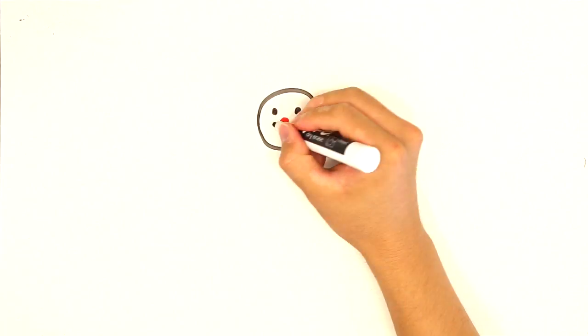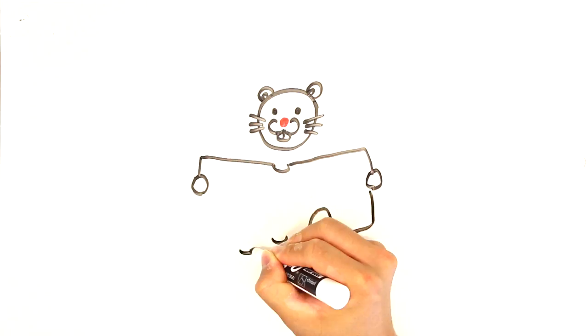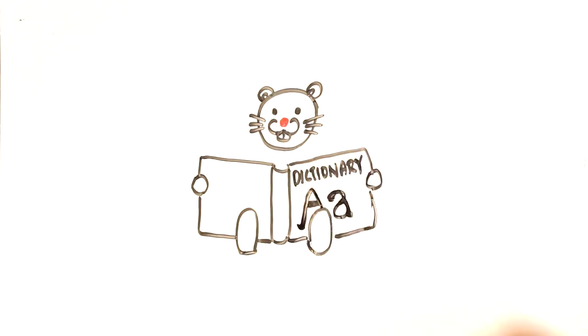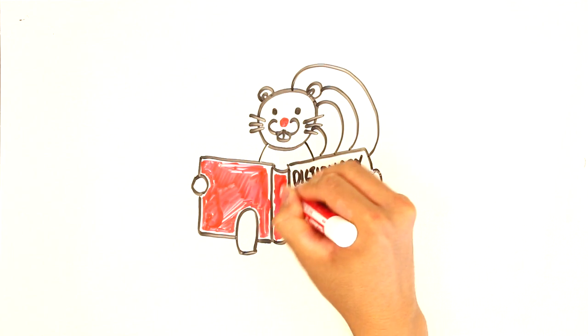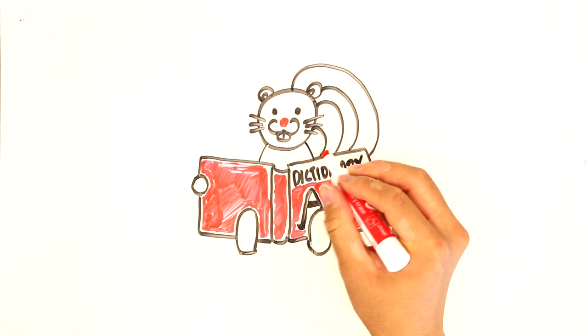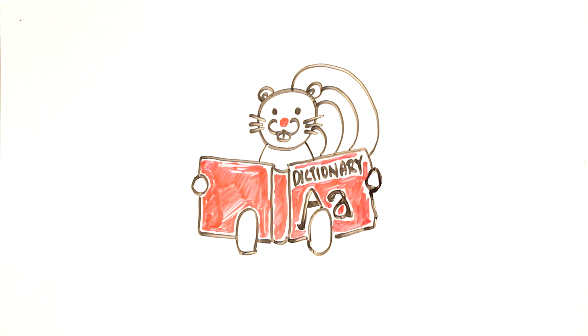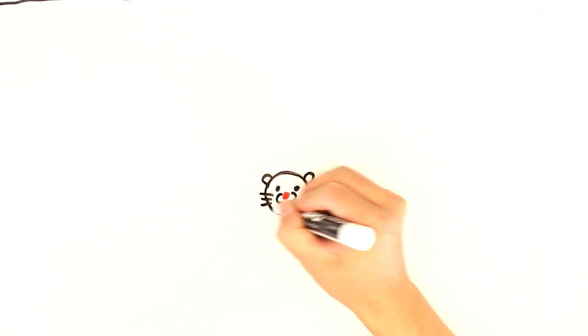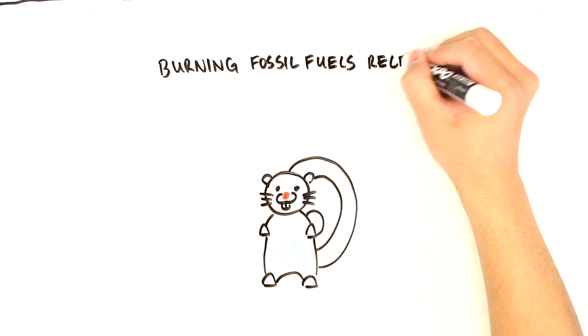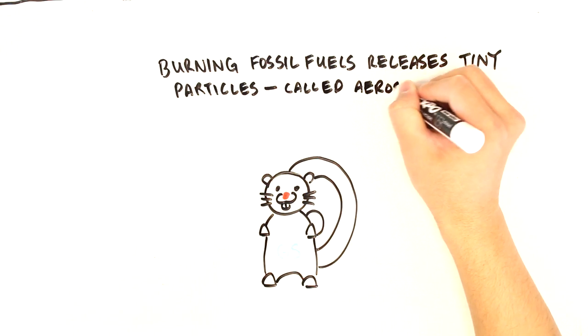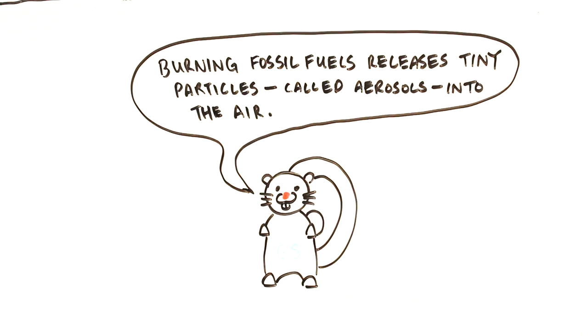This time, GrammarSquirrel checks the dictionary, and sees that there are indeed two definitions for aerosols. One being tiny particles suspended in air, and two being materials packed into spray cans. So, realizing that there is a potential problem here, she rephrases her sentence to say, burning fossil fuels releases tiny particles, called aerosols, into the air. And suddenly, the problem has disappeared.